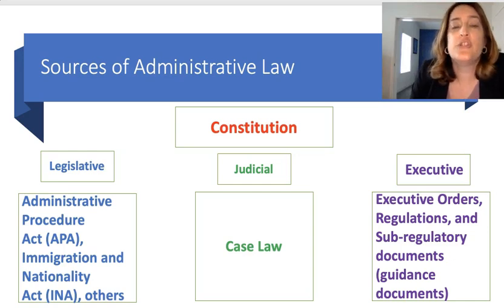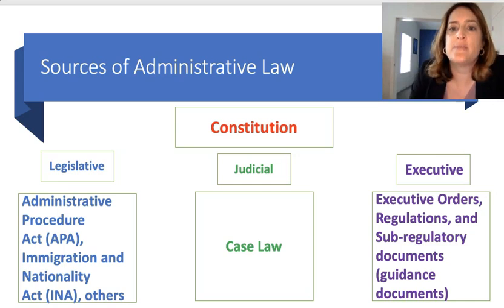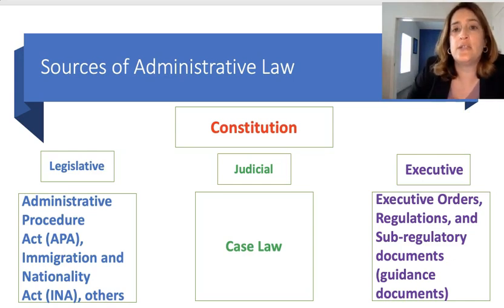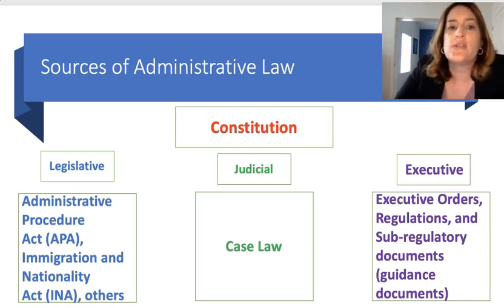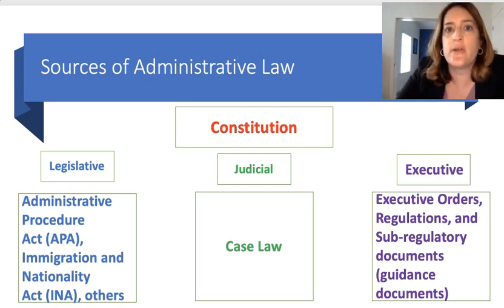The judicial branch writes opinions, and sometimes in those opinions courts clarify and explain what these other sources of law tell agencies to do. Those are the sources of administrative law generally, and they apply to the federal immigration agencies as well.